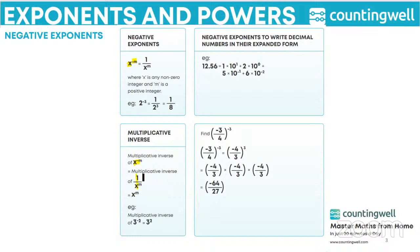Whenever you are writing multiplicative inverse, you have to take the reciprocal, which means interchanging the numerator and the denominator. So x raised to m will go to the numerator and one will go to the denominator. Since it is okay to write without one in the denominator, we can write it as x to the power m. So the multiplicative inverse of 3 to the power minus 2 is 3 to the power 2.